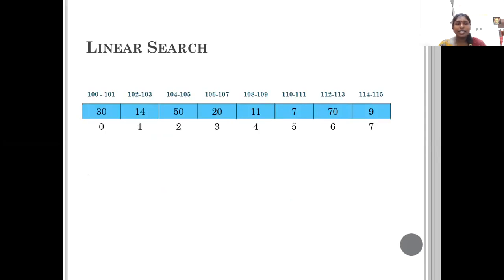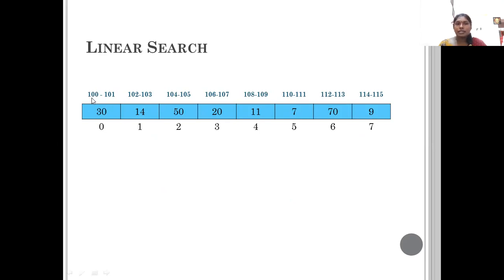I have taken an example array starting from 30, 14, 50, 20 — these are the elements present in the array. When it is an array, it is stored in sequential memory locations. The index starts from 0 to 7, so I have 8 elements. In memory, I have taken 100 as the starting address, and 2 bytes of memory is reserved for each element. So 30 takes positions 100 to 101, and it goes on for all 8 elements.